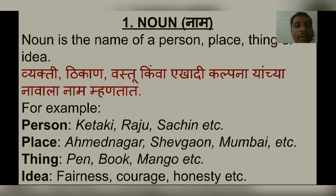Place — like Ahmadnagar, Shivgov, Mumbai, etc. Thing — like pen, book, mango, etc. Idea — like fairness, courage, honesty, etc.